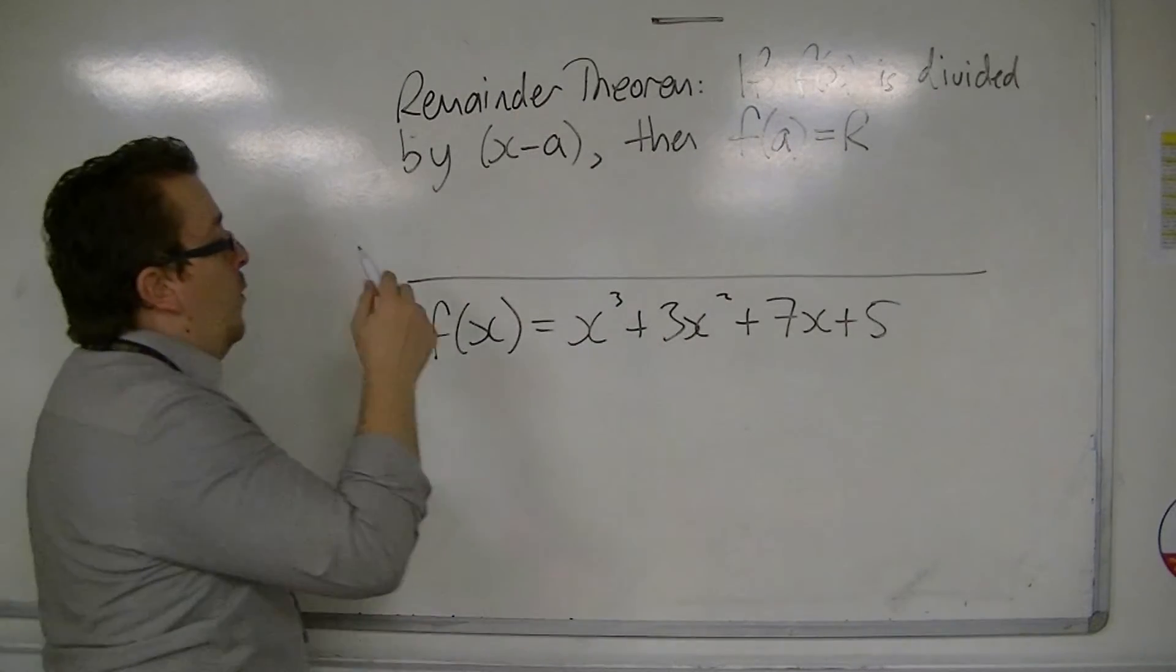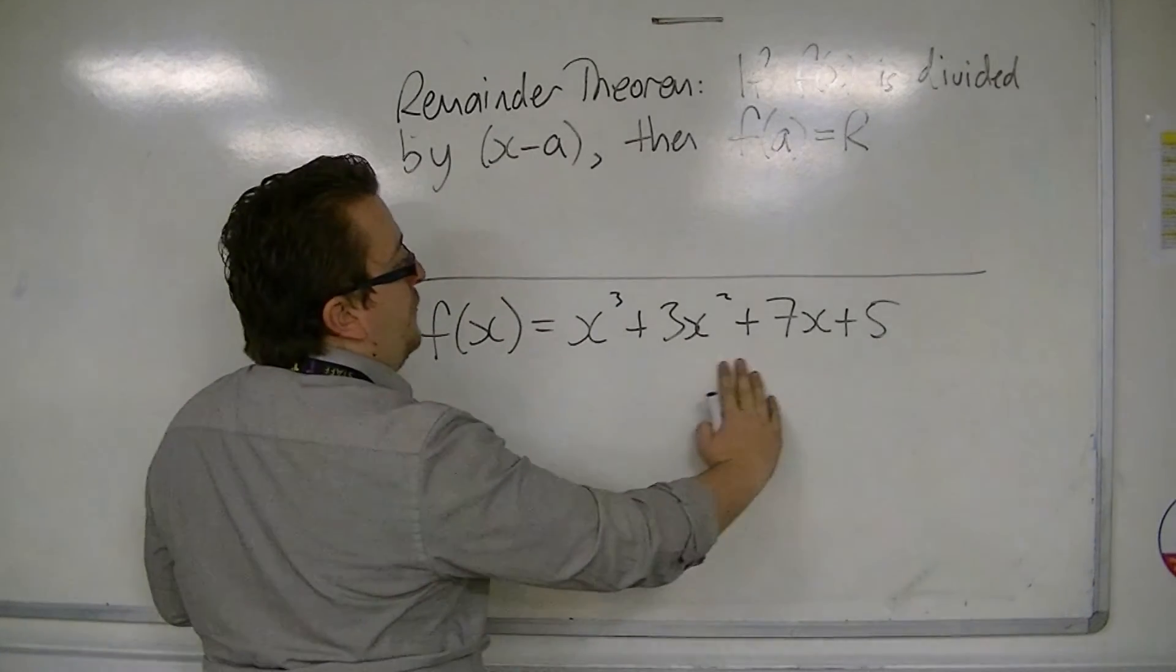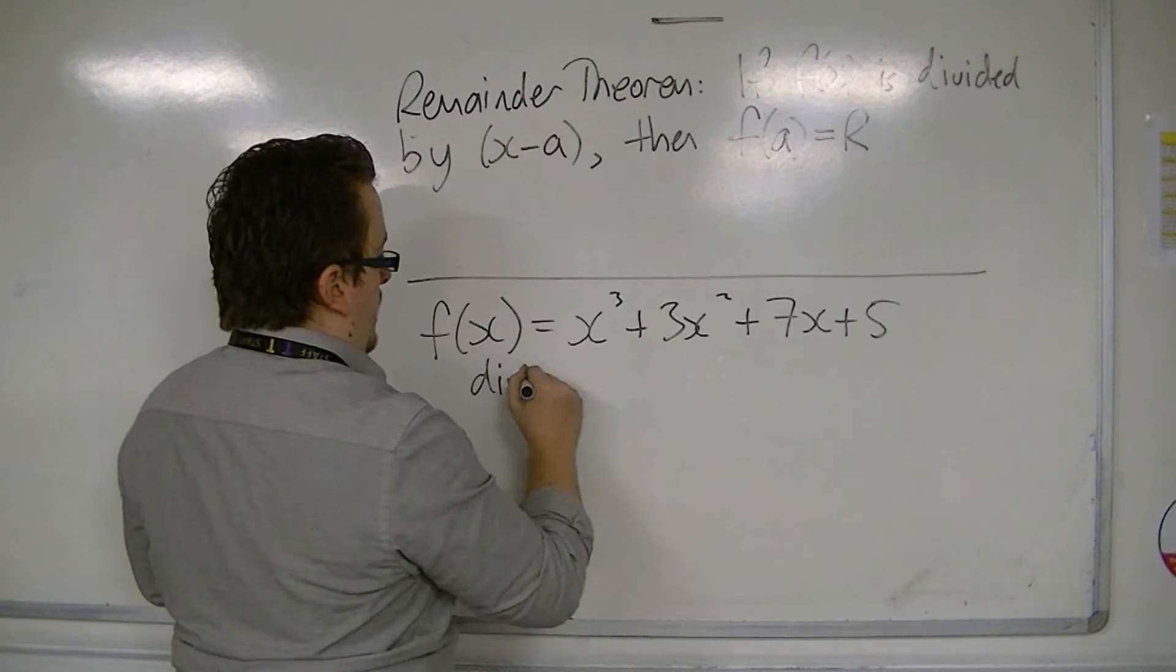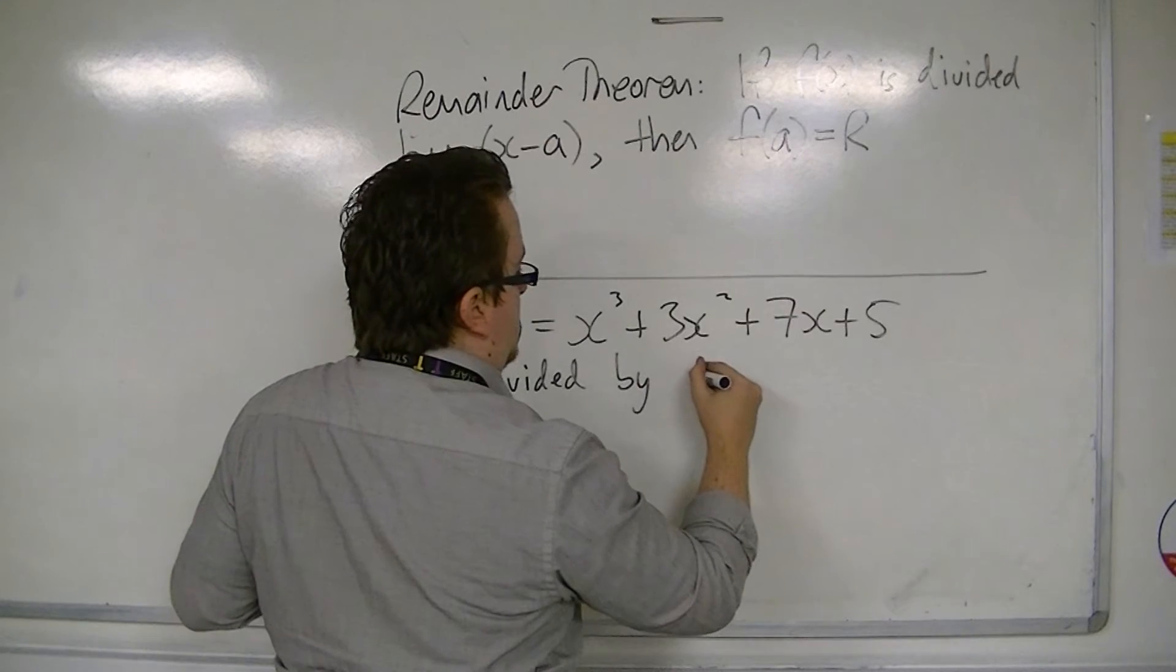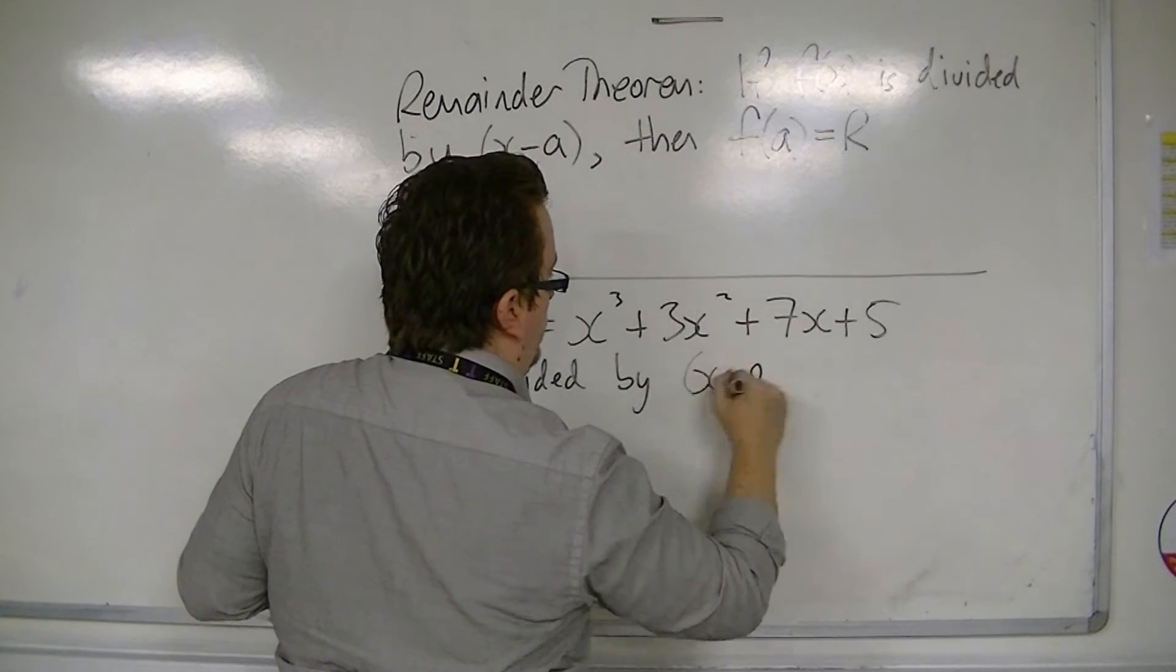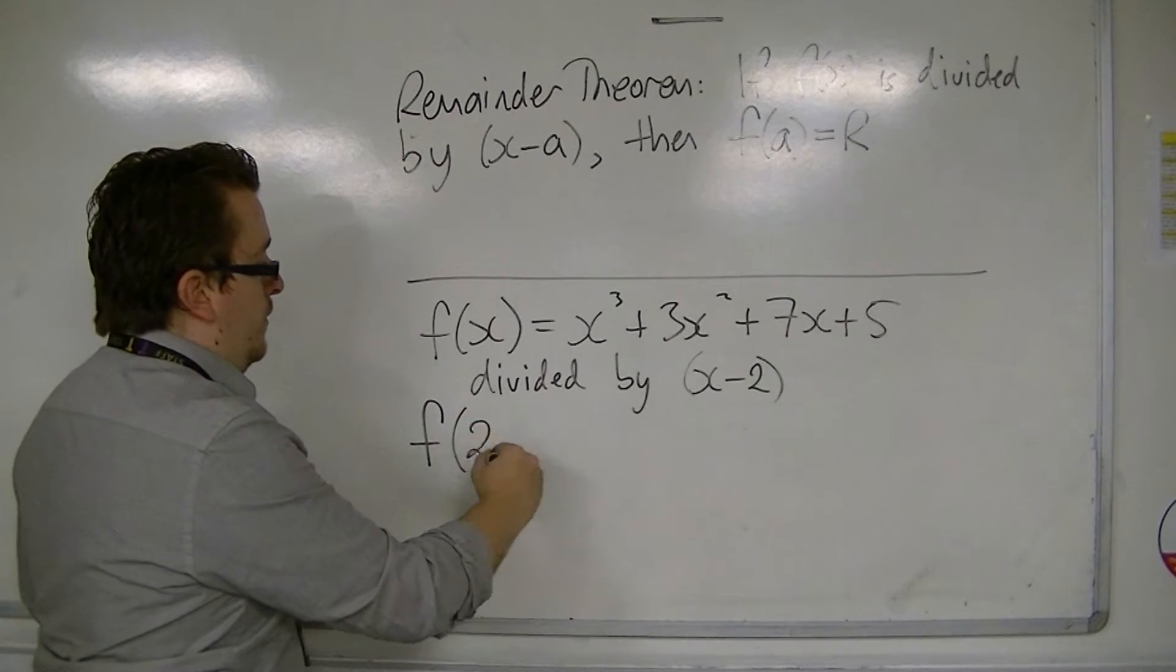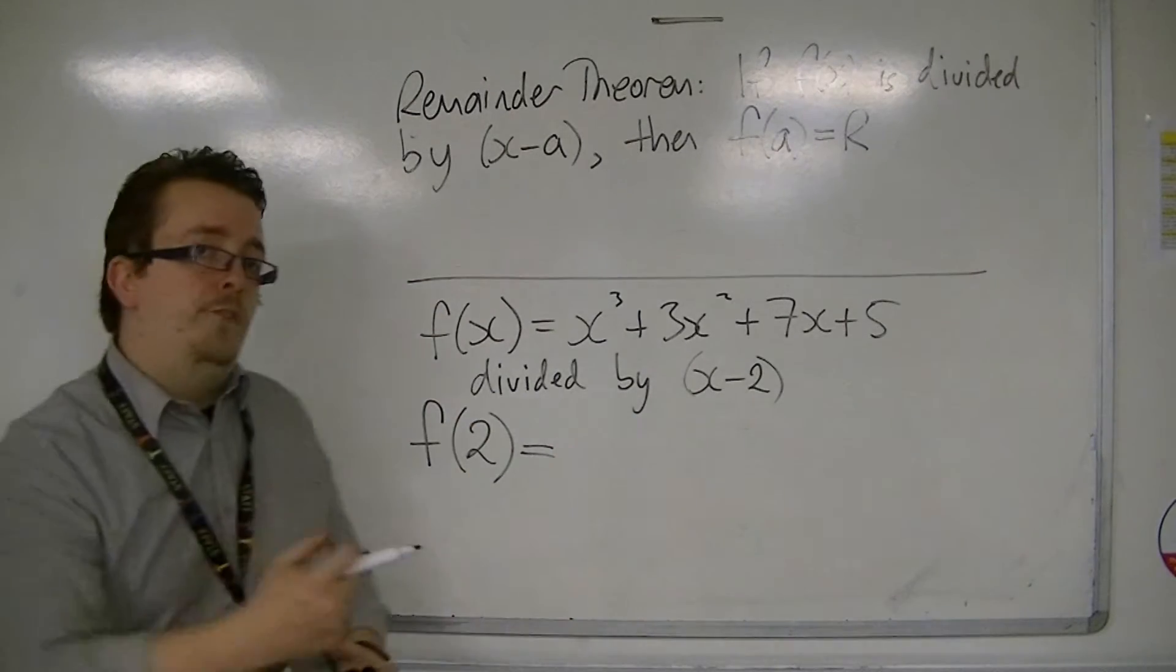So what that effectively means is that if I were to divide this polynomial by, let's say, x minus 2, then if I substitute in 2, notice how the sign changes, like it did for the factor theorem.